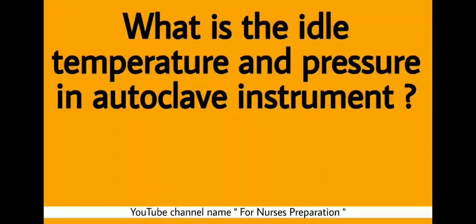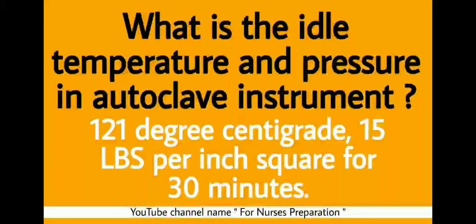What is the ideal temperature and pressure in an autoclave instrument? The ideal temperature and pressure in an autoclave instrument is 121 degrees centigrade, 15 lbs per inch square, for 30 minutes.